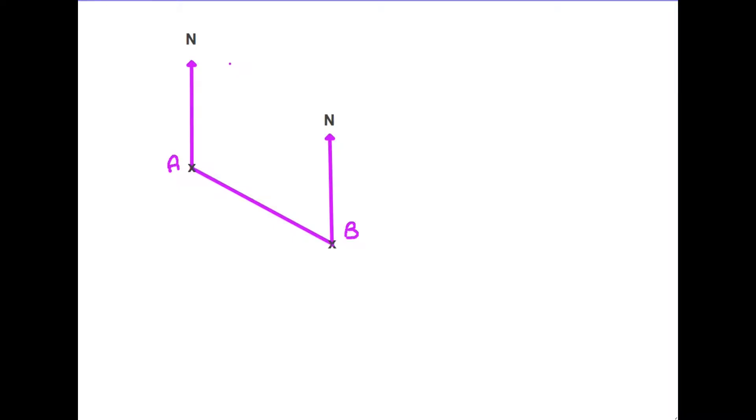Let's start then with a definition of what a bearing actually is. A bearing is a direction. It is measured as an angle, so with a protractor, and therefore it's measured in degrees. But there are some differences that we need to be aware of between measuring a normal angle and measuring a bearing.